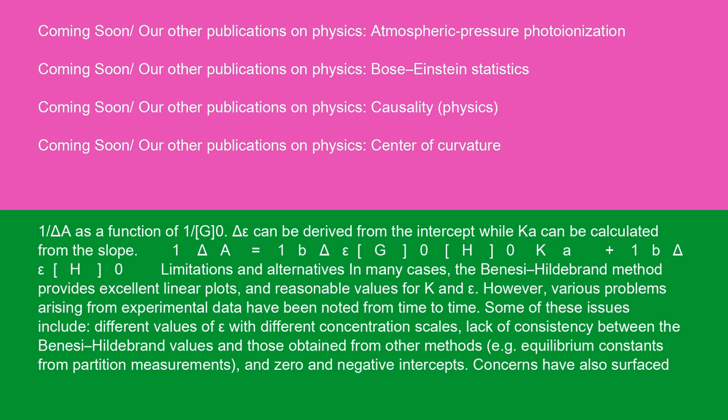Limitations and alternatives: In many cases, the Benesi-Hildebrand method provides excellent linear plots and reasonable values for K and epsilon. However, various problems arising from experimental data have been noted from time to time. Some of these issues include different values of epsilon with different concentration scales, lack of consistency between the Benesi-Hildebrand values and those obtained from other methods (e.g., equilibrium constants from partition measurements), and zero and negative intercepts.